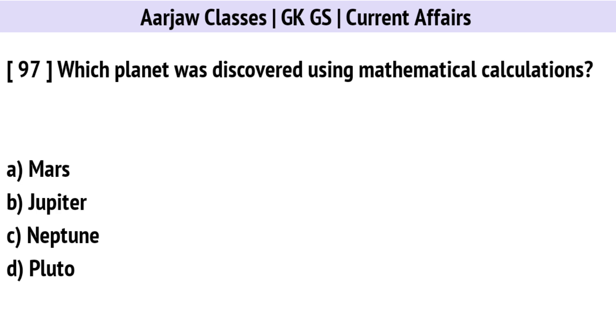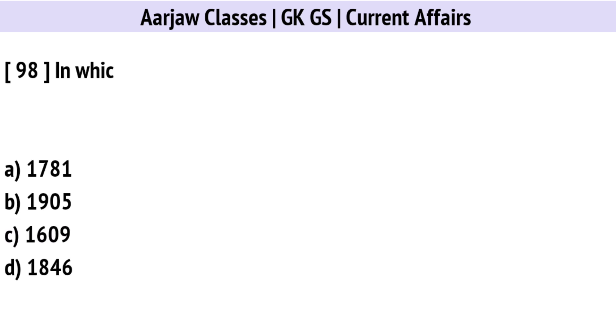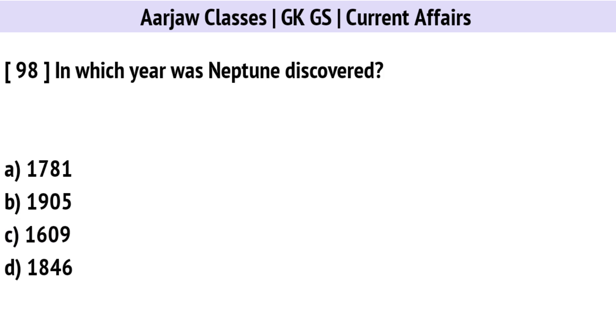Which planet was discovered using mathematical calculations? Correct option is C: Neptune.